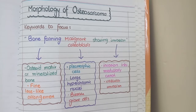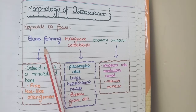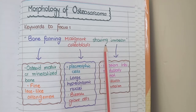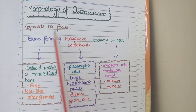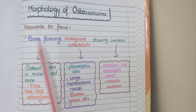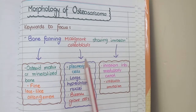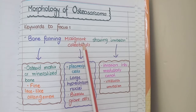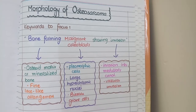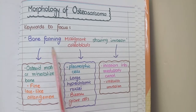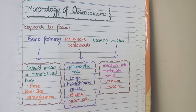For the morphology of osteosarcoma, the key features are bone-forming malignant osteoblasts that show invasion. 'Osteo' means bone forming and 'sarcoma' means cancerous. Cancerous cells have malignant-appearing osteoblasts and show invasion — these are the keywords to focus on.